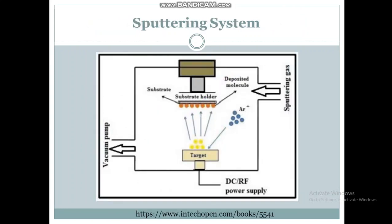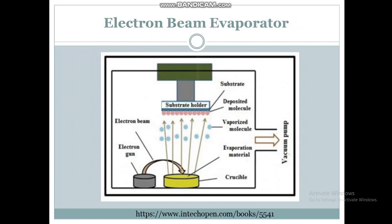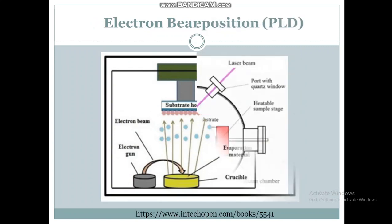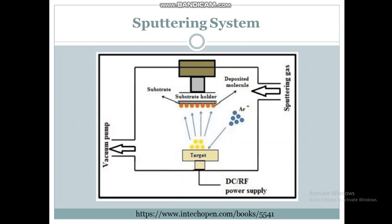In the sputtering system, a gas such as argon gas hits the target material, causing atoms to be ejected and strike the substrate, where they are deposited. It is similar to the electron beam evaporator, but in this technique the gas causes sputtering of the material, which is then deposited on the substrate.